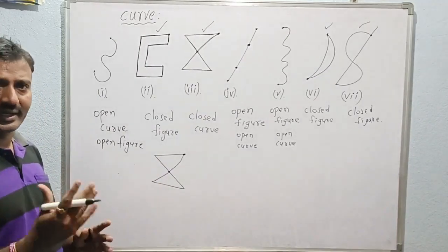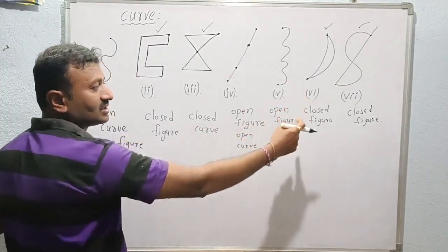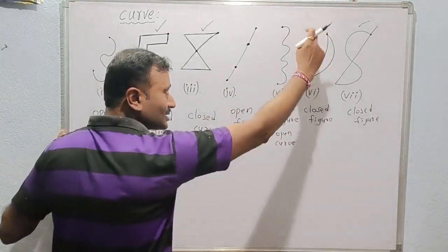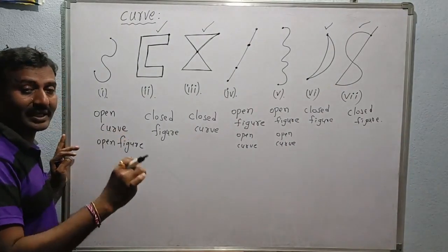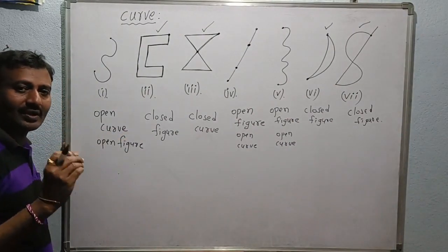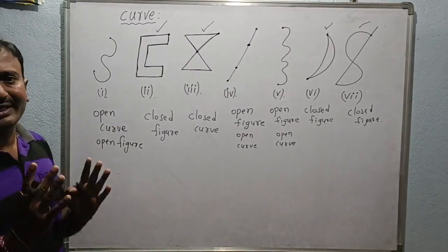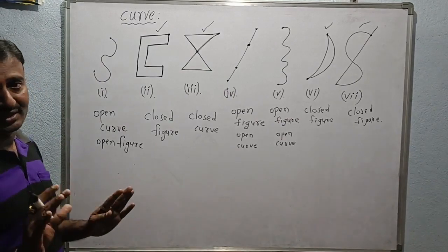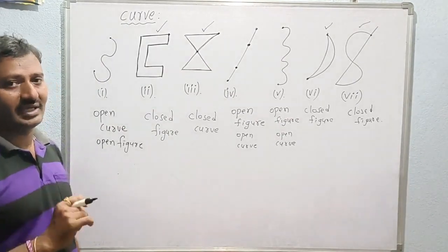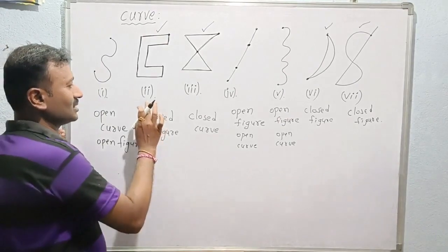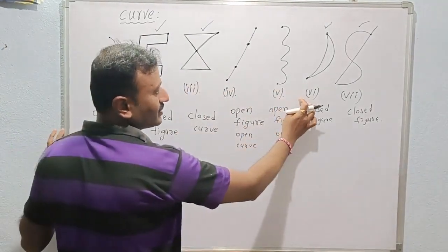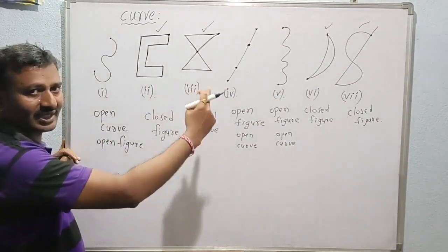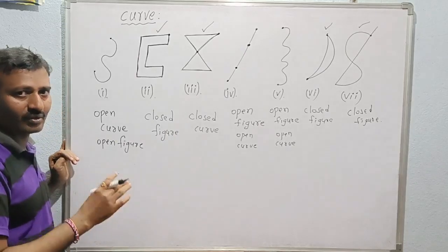Figure six is also treated as a simple closed figure because it does not intersect except at its end point. A figure is called a simple closed figure if it intersects only at the end points and not itself anywhere else. So figures two and six are simple closed figures, while figures three and seven are only closed figures.